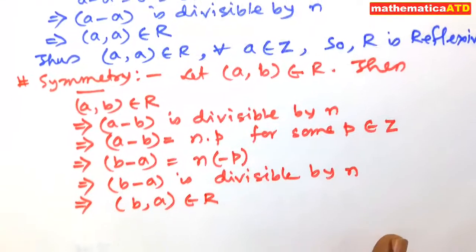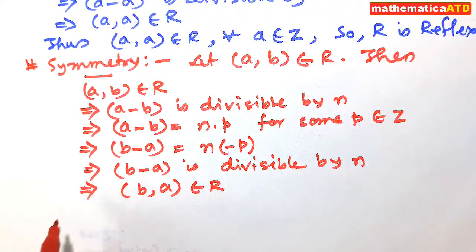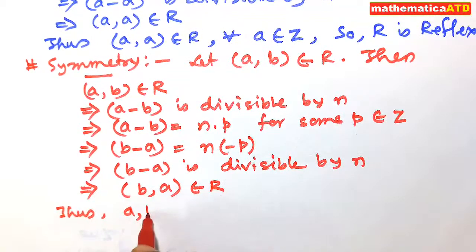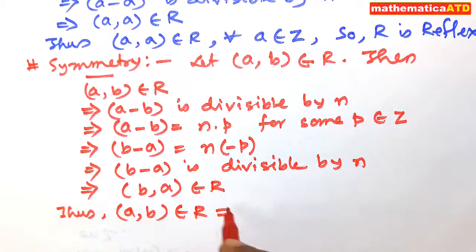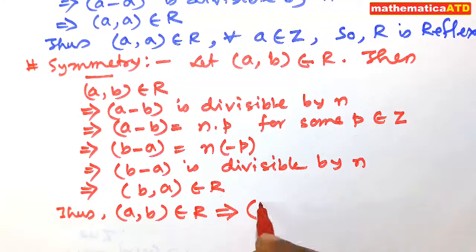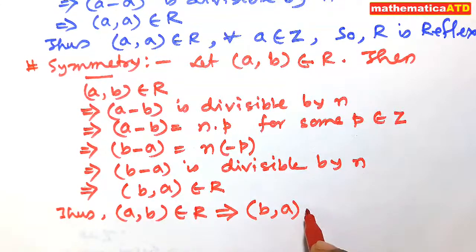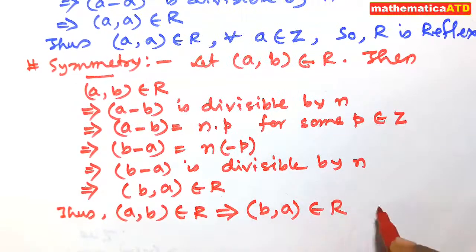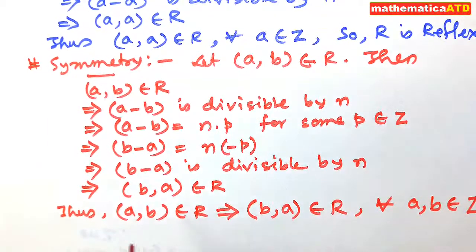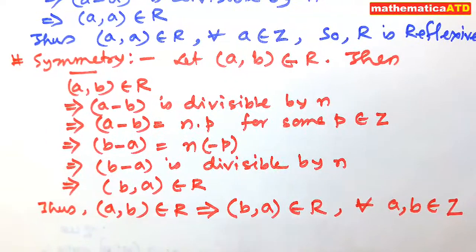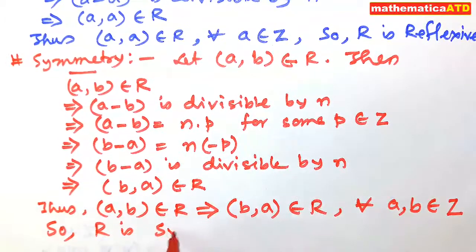It implies that the ordered pair (b, a) belongs to R. In summary, (a, b) belonging to R implies (b, a) also belongs to R for all a, b belonging to set Z. So R is symmetric on Z.